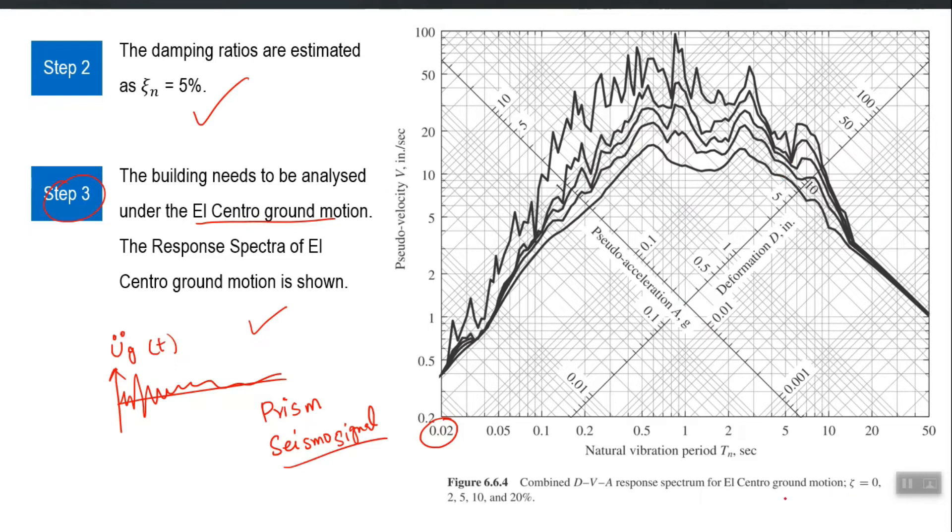this is plotted for all damping ratios, xi equal to 0, 2, 5, 10, and 20 percent. So, obviously, the highest line will be for 0, then this will be 2 percent, then the third will be for 5 percent, then 10 percent, and then 20 percent. So, let us say that I already have the line corresponding to 5 percent. It is available with me because my damping was 5 percent.